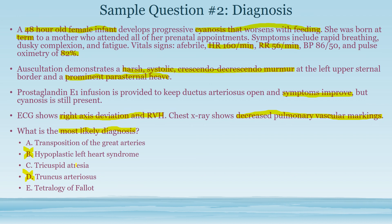In tricuspid atresia, the right side of the heart is more affected, so you would actually see left-side enlargement rather than right-side enlargement — that doesn't fit. Transposition of the great arteries would not produce a harsh crescendo-decrescendo murmur; instead, you'd get a loud single second heart sound from excessive blood flow, more of a flow murmur rather than a stenosis pattern. So transposition of the great arteries can be eliminated as well.